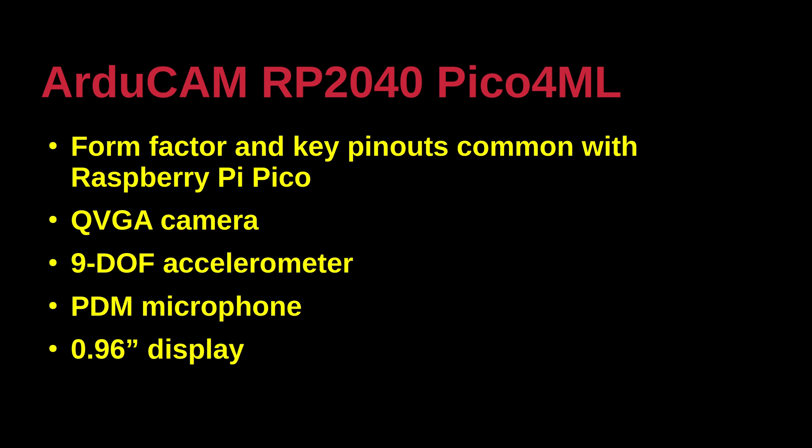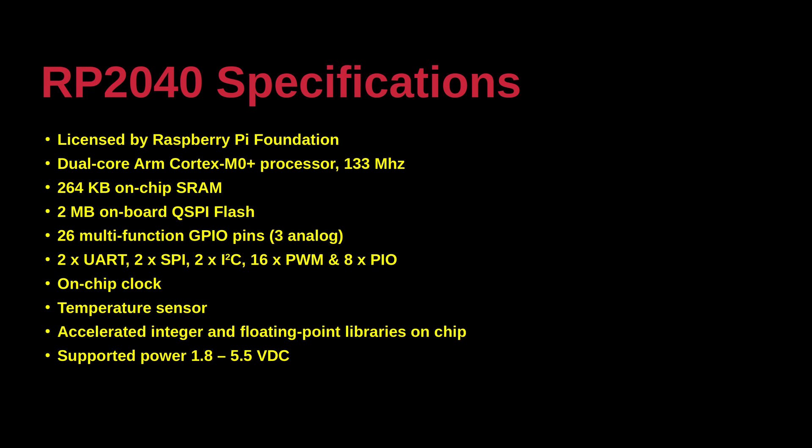For image recognition purposes, especially in the current learning environment, monochrome or grayscale is perfectly adequate. The Raspberry Pi Foundation supplies RP2040 chips in traditional reels to licensees. Key characteristics include a dual-core ARM Cortex M0 Plus processor at 133 megahertz, 264 kilobytes of static random access memory, and 2 megabytes quad serial peripheral interface for flash memory.